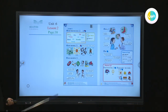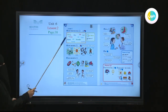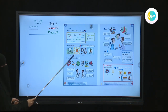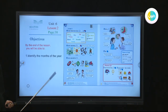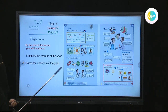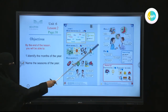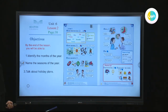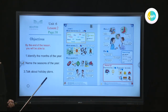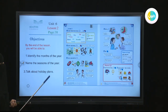Today, you can see this is our lesson. Here we have the months of the year and the seasons of the year. We are going to identify the names of the months of the year, know the seasons of the year, and continue talking about our future plans and holiday plans. This is Unit 6, Lesson 2, page 38.